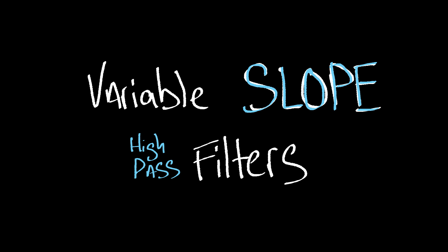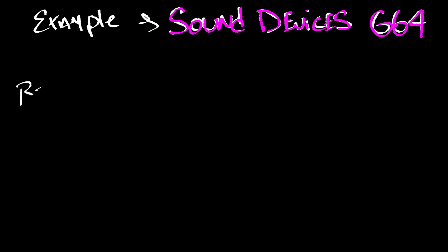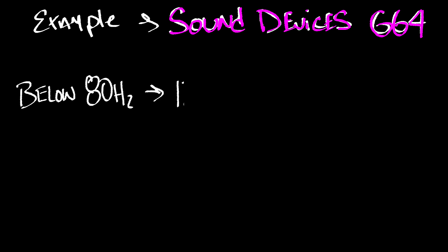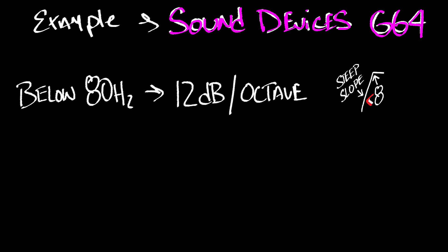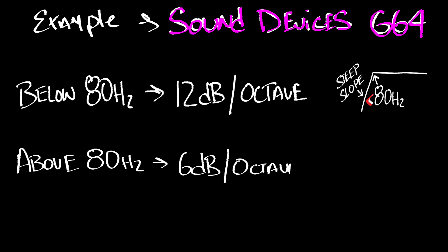Some high pass filters are variable slope, applying different amounts of cut depending on the selected frequency. This can allow for more drastic cuts at lower frequencies, usually where you want to get more aggressive to mitigate things like wind noise or mechanical noises, or less cut when you select a higher frequency for the high pass filter, where you may be using it to mitigate things like proximity effect of a microphone.